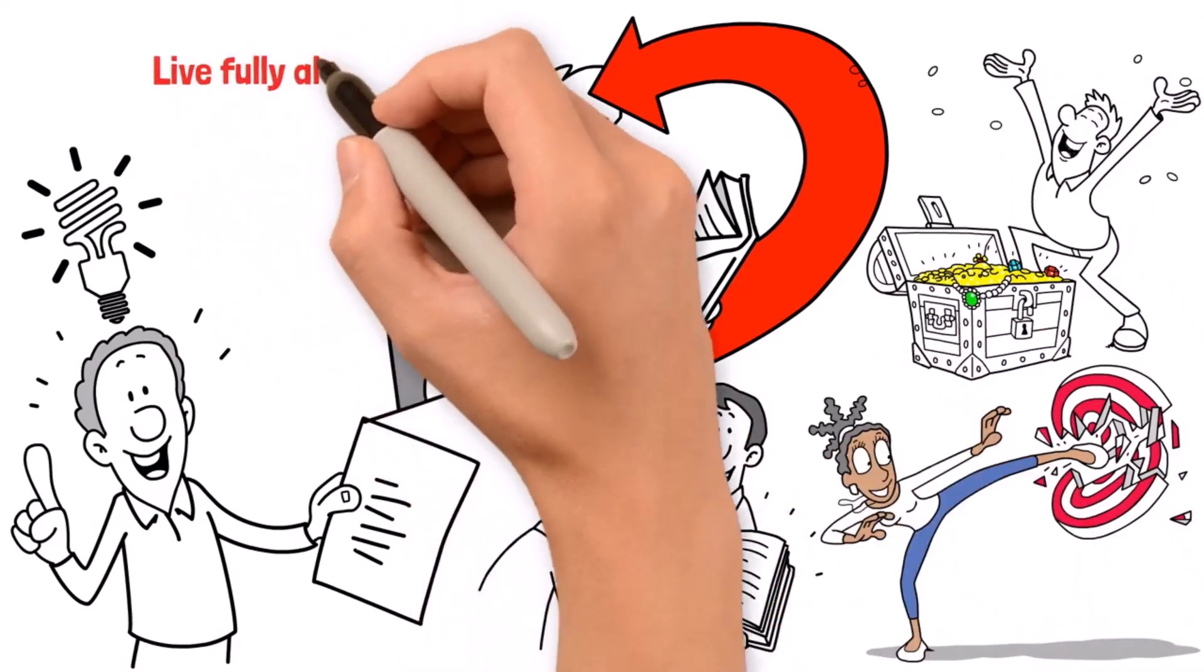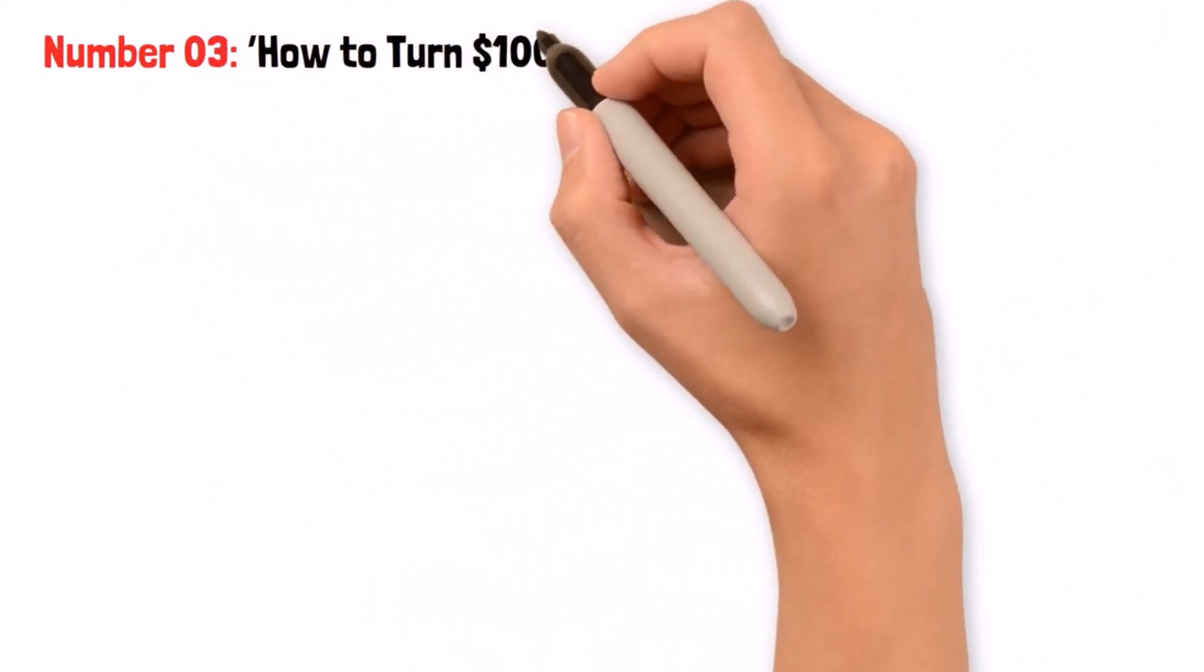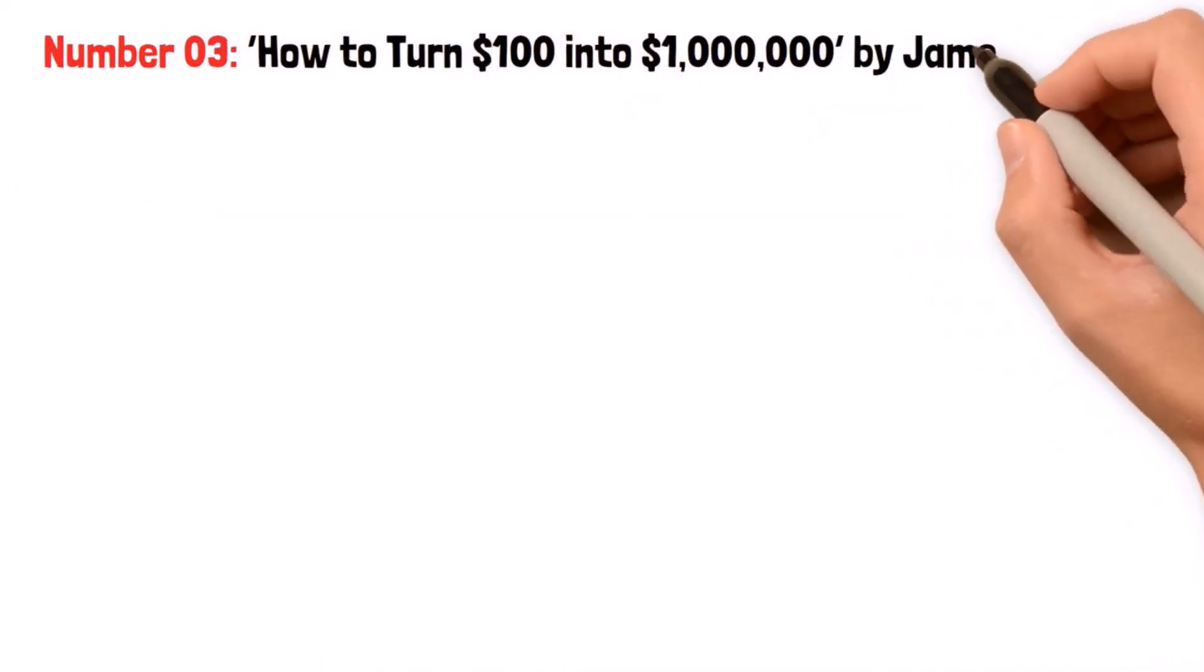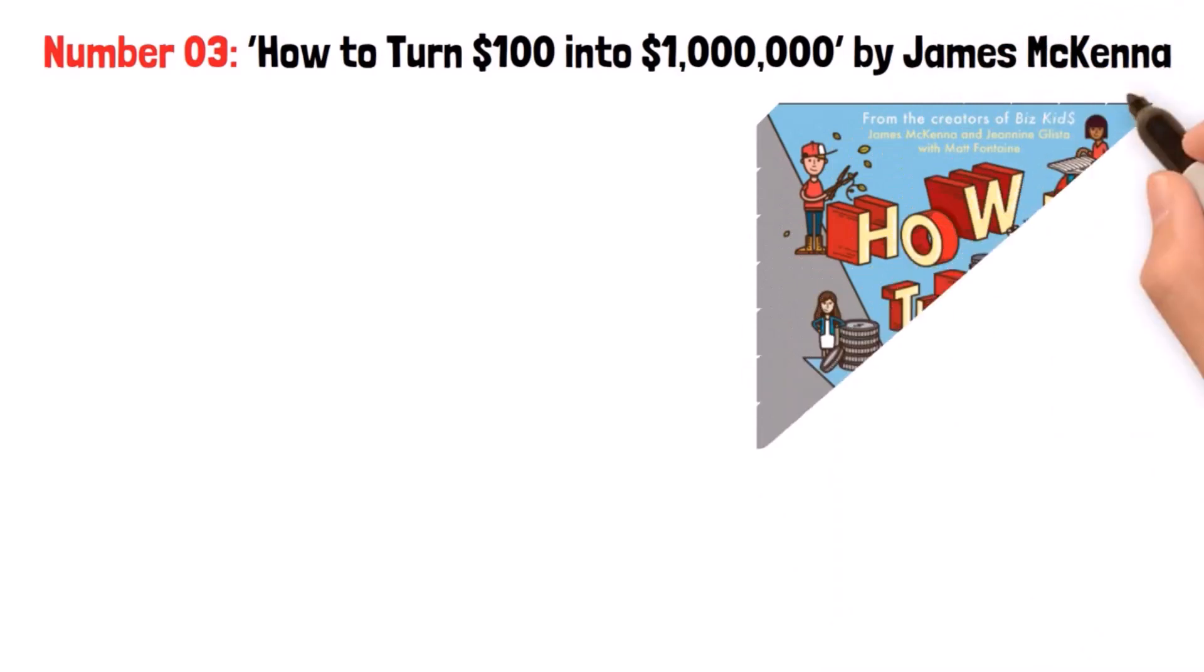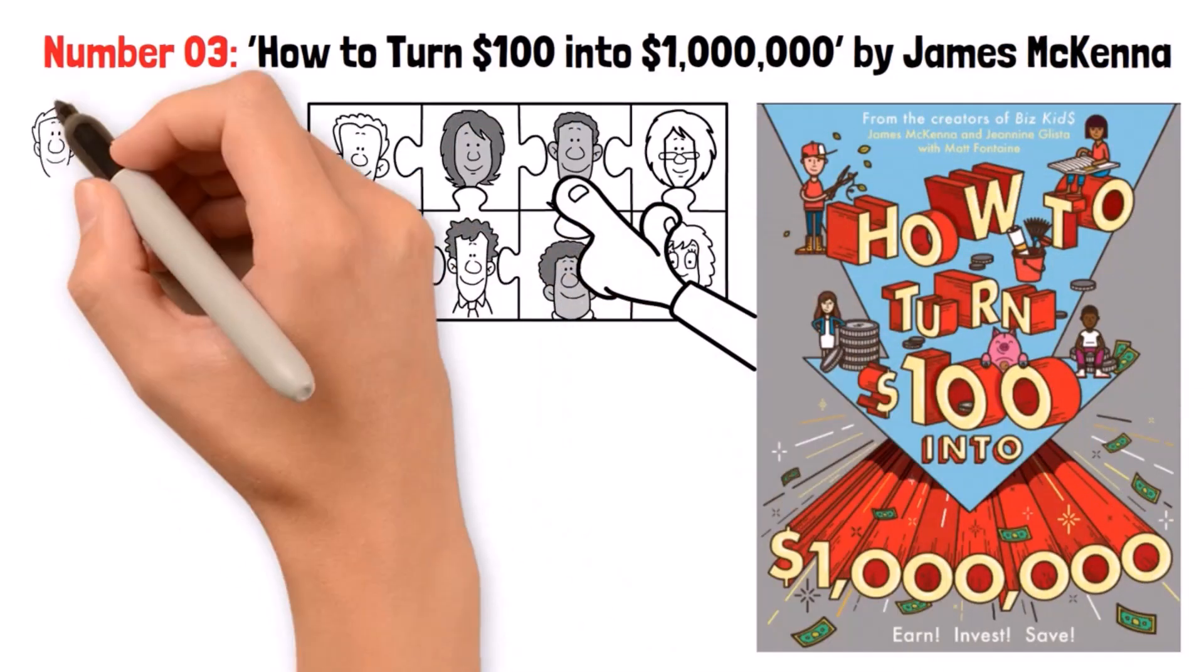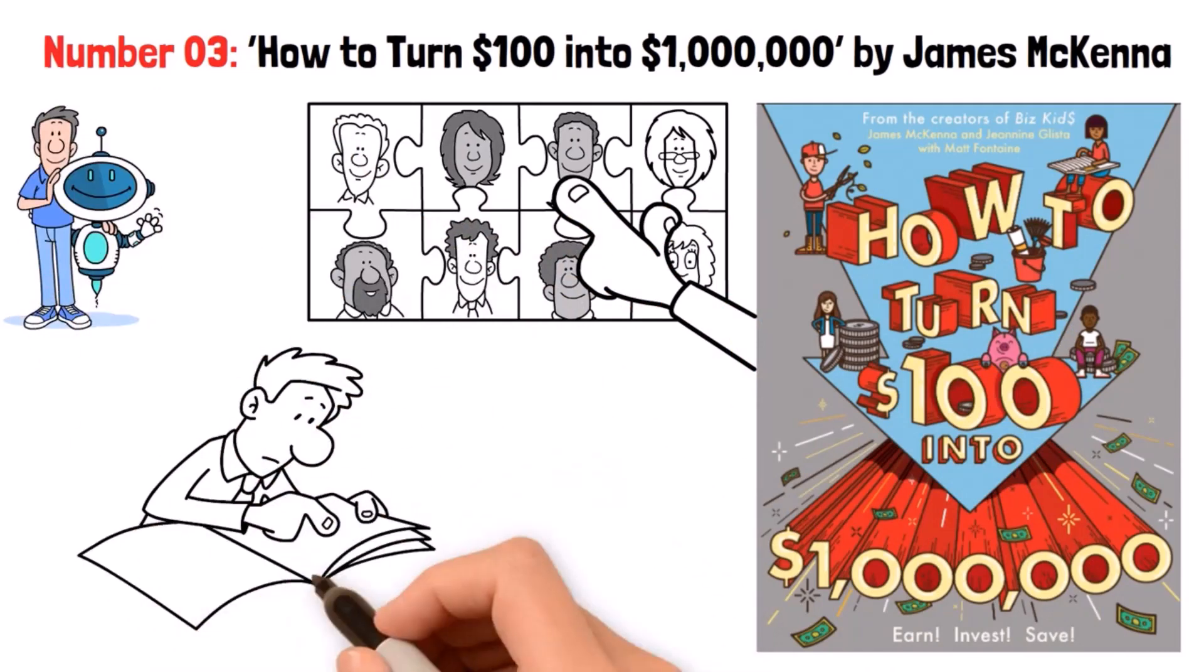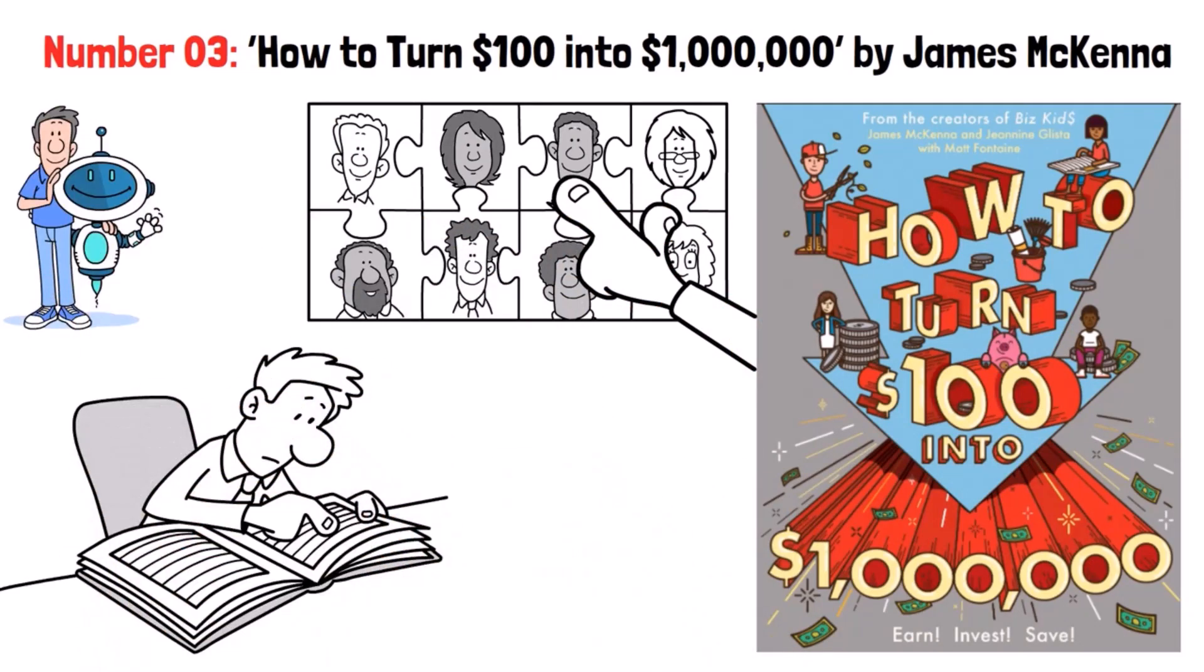Number 3: How to Turn $100 into $1 Million by James McKenna. Now this is an enlightening book full of invaluable lessons for the next generation of entrepreneurs. While it's a playful story, the book's true treasure lies in nurturing financial acumen from a young age.